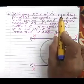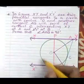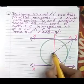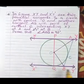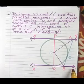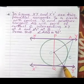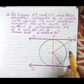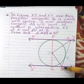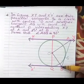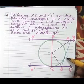So xy and x-dash y-dash are two parallel tangents to a circle with center O. These two lines are parallel — that is given. Now another tangent is given which is AB, touching the circle at point of contact C.